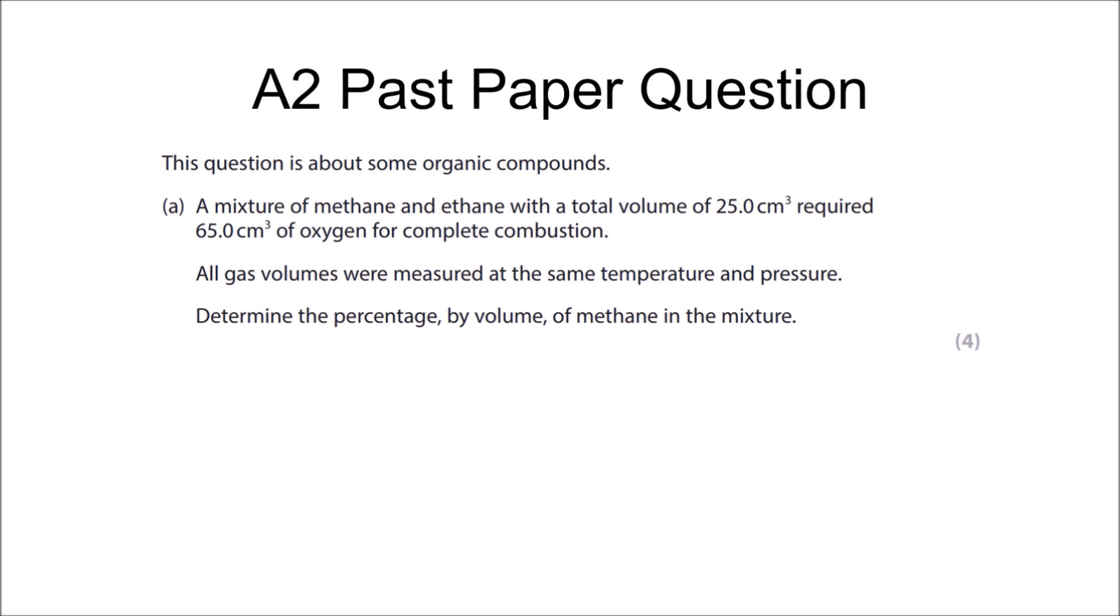Finally, I'd like to finish off with something a bit more challenging. A cheeky little format question that was thrown into the June 2020 Unit 5 exam. They want us to calculate the percentage of methane in a 25 cubic centimetre mixture of methane and ethane that requires 65 cubic centimetres of oxygen for complete combustion. So straight away, I'm going to write the equations for the complete combustion of methane and ethane.